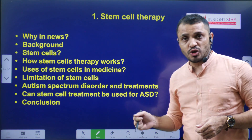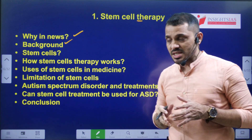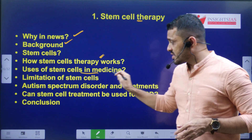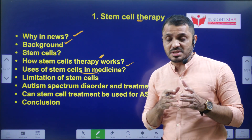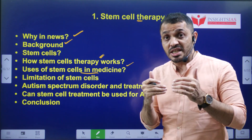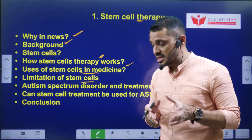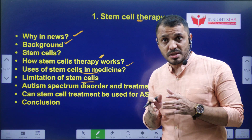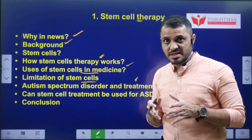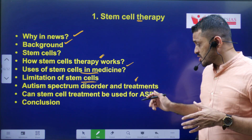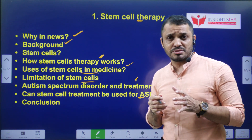In this video we are going to discuss stem cell therapy in detail: why it is in use, the background of stem cell therapy, what stem cells are, how stem cell therapy works, the uses of stem cells in medicine, and what diseases they are useful for. Stem cell therapy is generally known as regenerative therapy because you are regenerating damaged tissue. We will also cover limitations, ethical issues, the responsible institutions, the Supreme Court's allowance for autism treatment, and finally a conclusion.